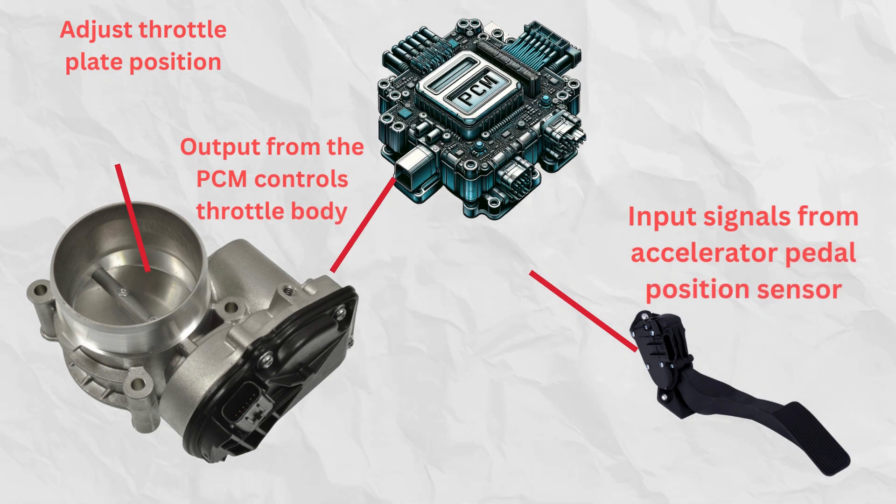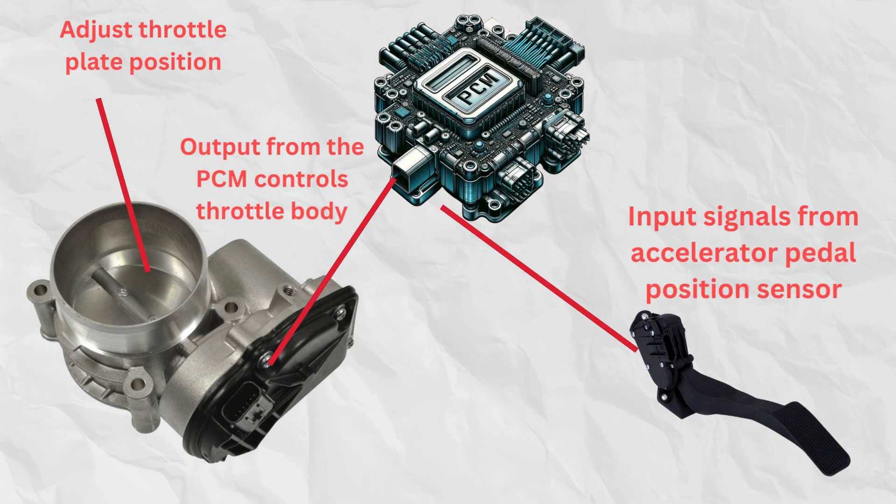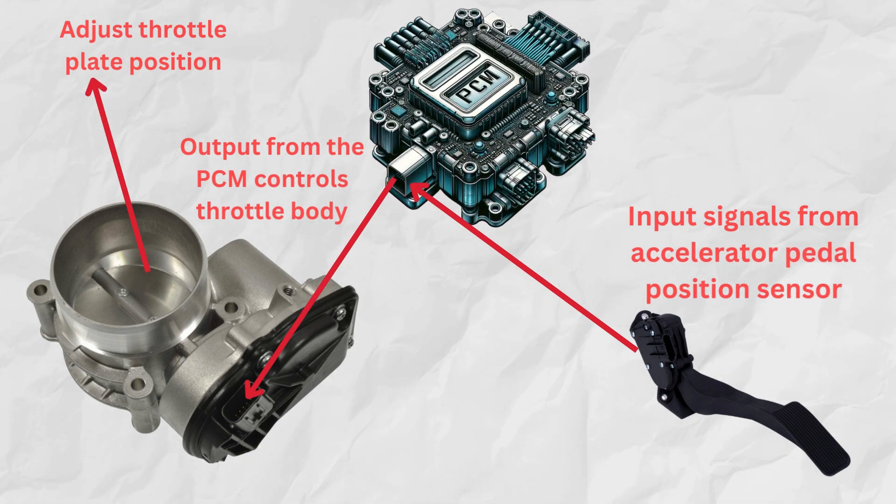On the other hand, the electronic throttle body works with accelerator position sensors to send inputs to the engine control module to adjust the throttle plate position.